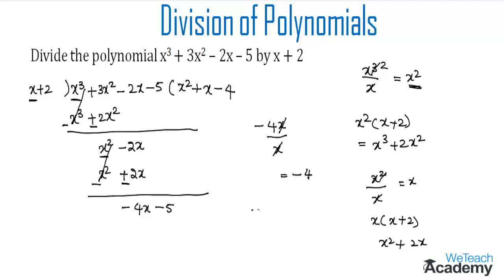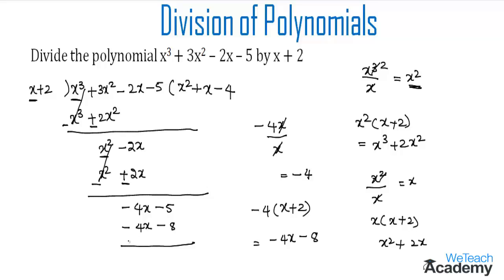Now let us multiply -4 with the divisor x + 2. We get -4 times x as -4x, and -4 times 2 is -8. Writing -4x - 8 below the new dividend and subtracting: the additive inverse of -4x is +4x, and the additive inverse of -8 is +8. So -4x + 4x cancels.